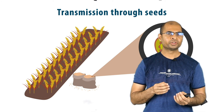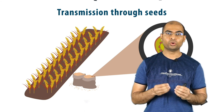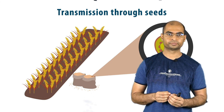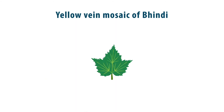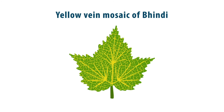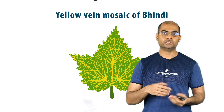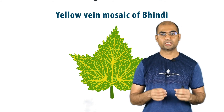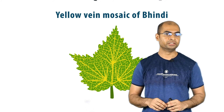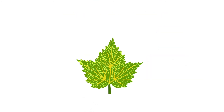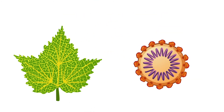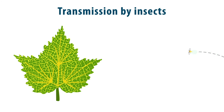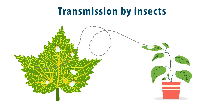Finally, we look at the disease called yellow vein mosaic of Bindi. This causes depletion of chlorophyll and results in formation of yellow patches on its leaves. This also inhibits photosynthesis and results in a very bad yield. This disease is caused by a virus that spreads from plant to plant by an insect called whitefly, which acts as a carrier for the virus.